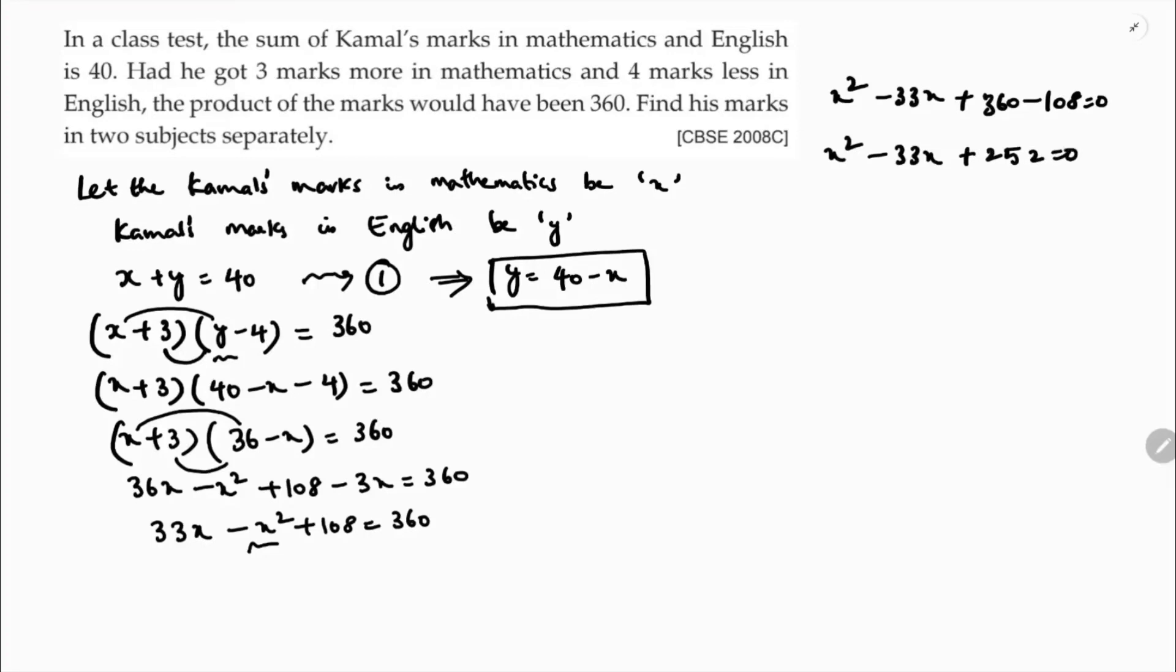Now with 252, I need to get the factors that sum to 33. If I do 252 prime factors: 2 times 126, 2 times 63, 3 times 21, 3 times 7. We need to get 33. 2 times 2 is 4, 4 into 3 is 12. So 21 and 12 are the factors.